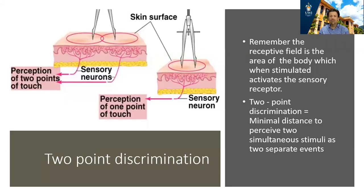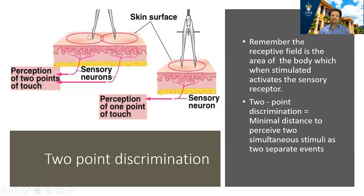In thinking about where is it, we also want to discuss two-point discrimination. Two-point discrimination is the minimal distance at which you can perceive two stimuli as separate events. If you apply two separate points within a single receptive field, because anything within that field is detected by one nerve, the nerve will only register it as one point — that is not two-point discrimination. However, if the two points fall within two overlapping receptive fields, the brain detects them and perceives two separate points.